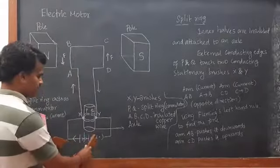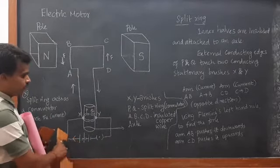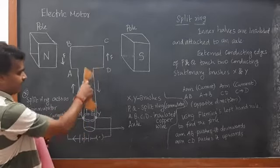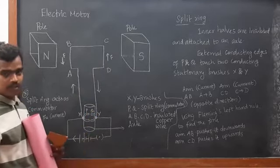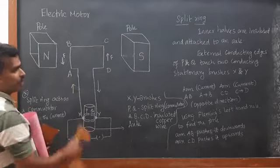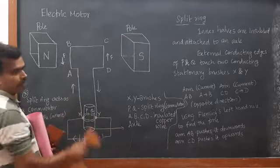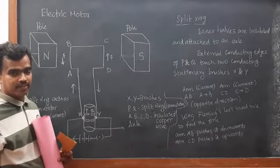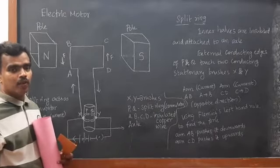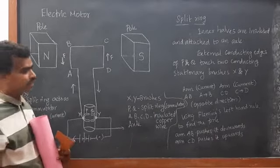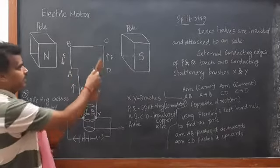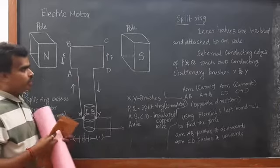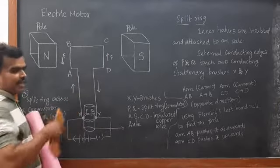Initially, what will happen? If we close the key and the battery is on, current will flow from brush X and pass through A, B, C, D, then reach Y and the negative terminal. While the current is passing, we also have a magnetic field, so a force will be developed. According to Fleming's left-hand rule, we can identify the direction of force — that force is pulling downwards on one arm and upwards on another, so it rotates in an anticlockwise direction.